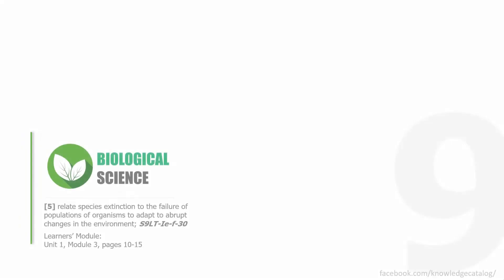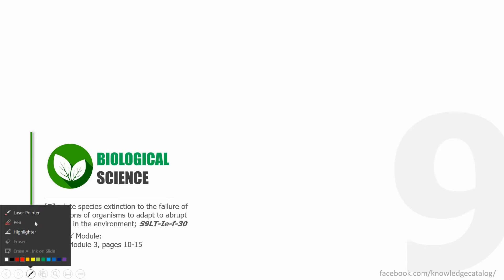Welcome to the Knowledge Catalog, Grade 9 Biological Science. This is Learning Competency Number 5, related to species extinction due to the failure of populations of organisms to adapt to abrupt changes in the environment. This is for Science 9, Life and Living Things. This is for the first quarter — please open your learner's module on Unit 1, Module 3, pages 10 to 15.